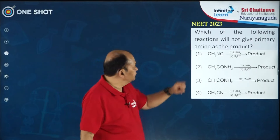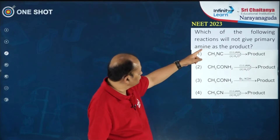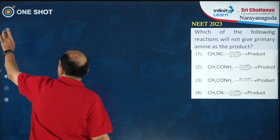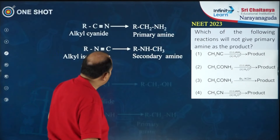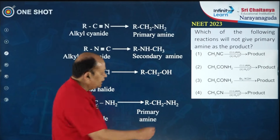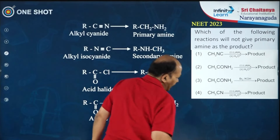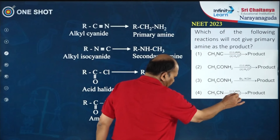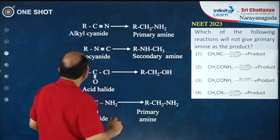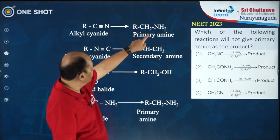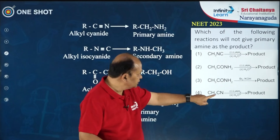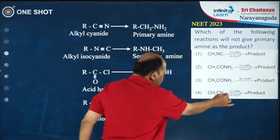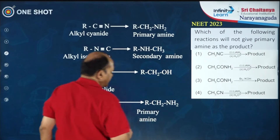We have a question on this from NEET 2023: which of the following reactions will not give primary amine as the product? Looking at reaction 4, methyl cyanide treated with LiAlH4 gives primary amine — so this is not the answer. Reaction with amide and bromine/KOH (Hofmann bromide reaction) also gives primary amine. Amide with LiAlH4 also gives primary amine. So options 2, 3, and 4 are not correct.